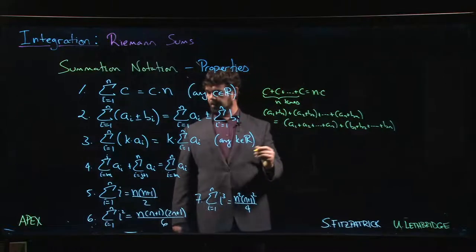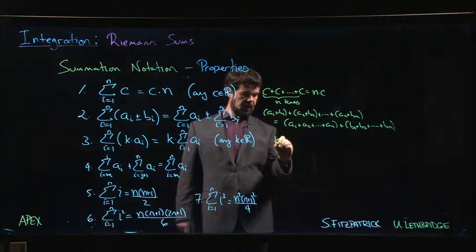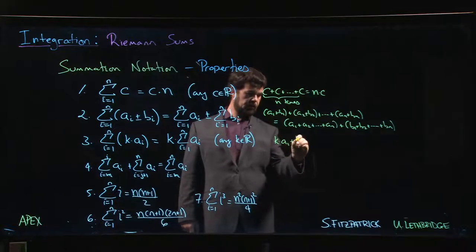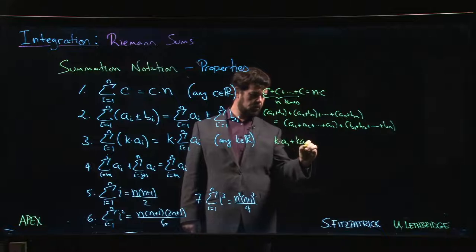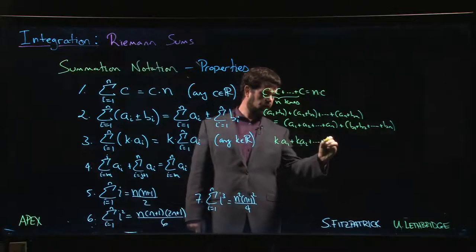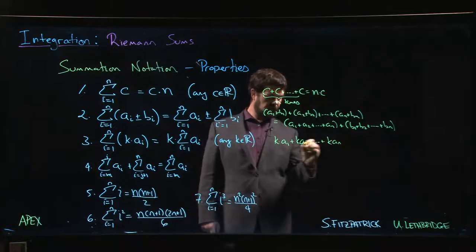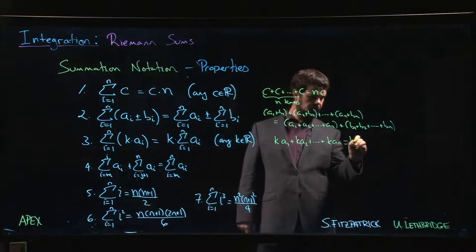This one is just the distributive property. If you have k times a1 plus k times a2 down to k times an, you've got k as a common multiple—you can factor it out. Again, something we know.